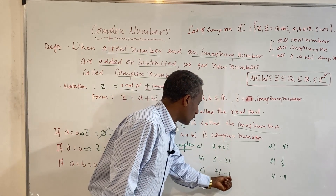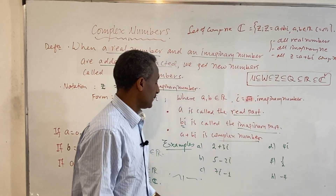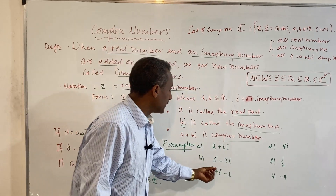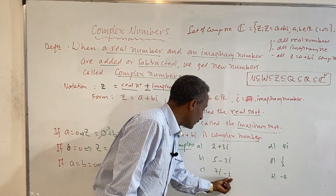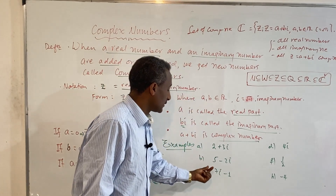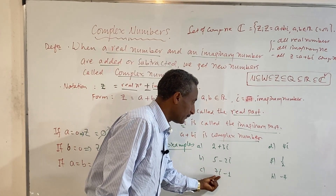The number 7i minus 1: the real part is minus 1 and the imaginary part is 7i.